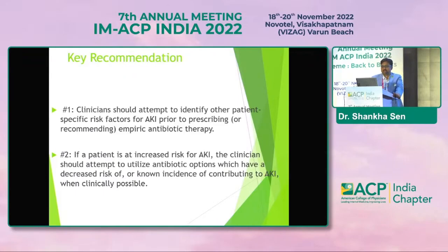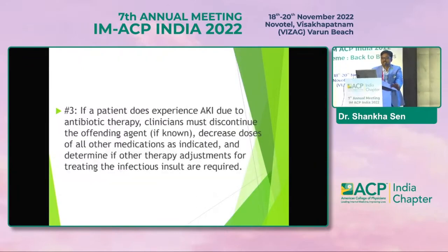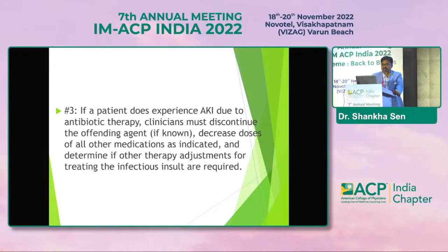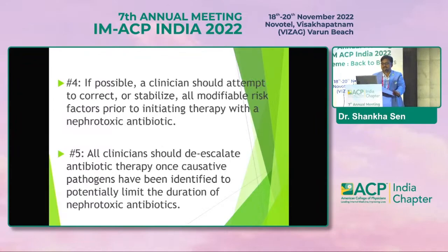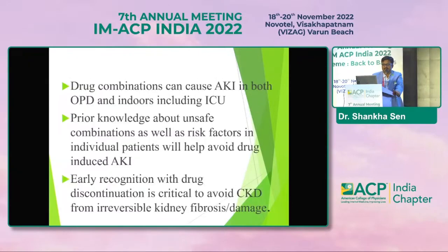Clinicians should identify patient-specific risk factors before starting empiric therapy. If a patient is at increased risk of AKI, consider antibiotic options with decreased renal risk. If AKI occurs, discontinue the offending agent immediately, decrease and adjust doses of all other medications, and correct all modifiable risk factors prior to initiating therapy with a nephrotoxic antibiotic. Clinicians should de-escalate antibiotic therapy once causative pathogens are identified. Drug combinations can cause AKI in both OPD and inpatient settings including ICU. Prior knowledge about unsafe combinations is the need of the hour, and early recognition with drug discontinuation is critical to avoid CKD from irreversible kidney fibrosis.